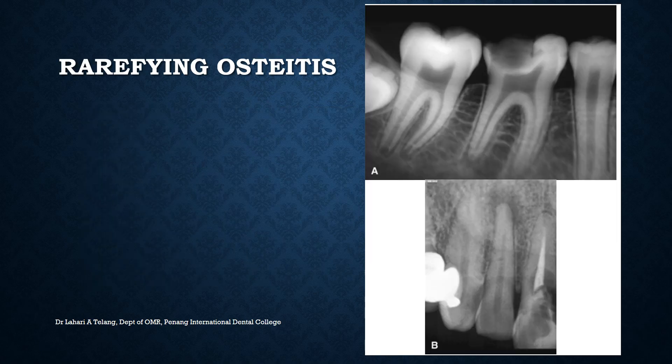Rarefying ostitis is a purely radiologic term used to indicate the appearance of radiolucency — again ill-defined — at the apex of a tooth that is periapically involved. Generally the tooth would be non-vital, the pulp is non-vital from caries or trauma, and the appearance is very similar to an abscess. You must understand that rarefying ostitis is a purely radiology term.